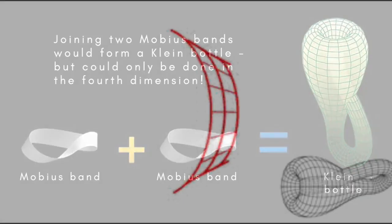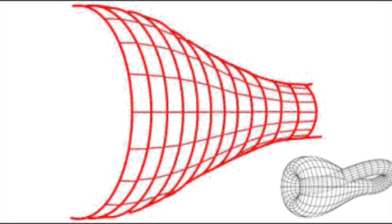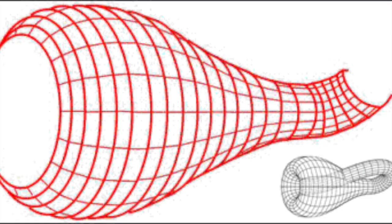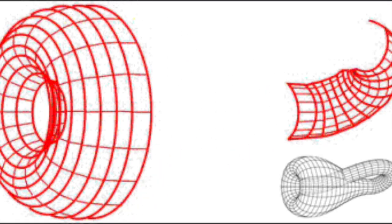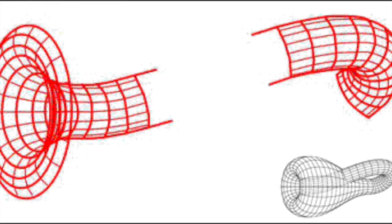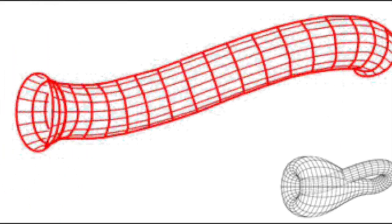Like a Mobius band, it's a continuous one-sided structure. Because it has no crease or fold, it has no verifiable definition of where its inside and outside begin.